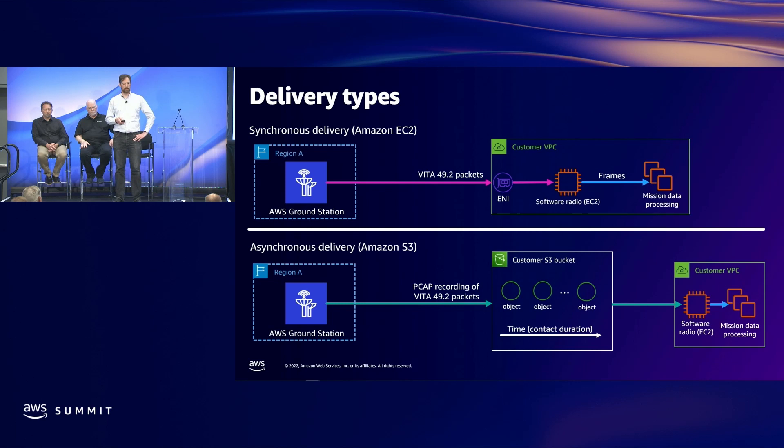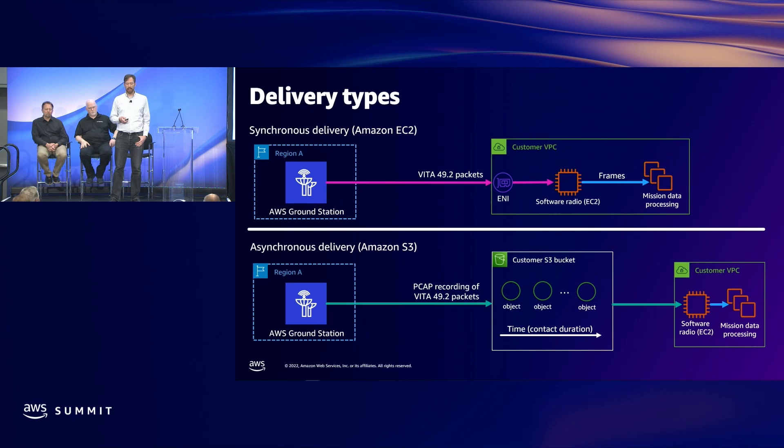In this example using DigIF, the next stop is an EC2 instance — a typical configuration. That EC2 instance runs a software radio responsible for demodulation and decoding, and then those demodulated and decoded frames are passed onward to mission data processing, a front-end processor, or whatever's appropriate next in the signal chain.